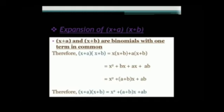When you multiply x with (x + b), you get x² + bx. When you multiply a with (x + b), you get ax + ab. So you have got the solution of (x + a)(x + b), which is equal to x² + bx + ax + ab.